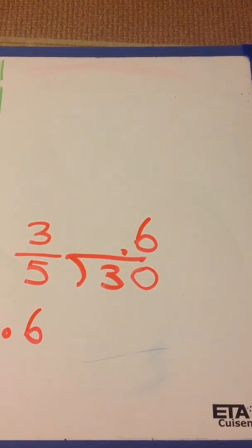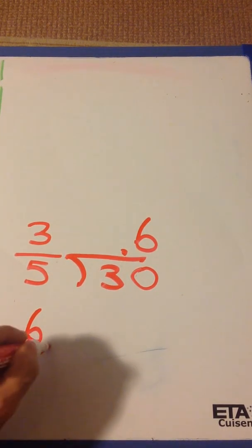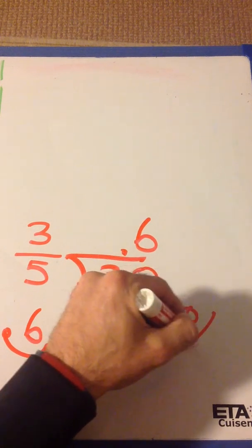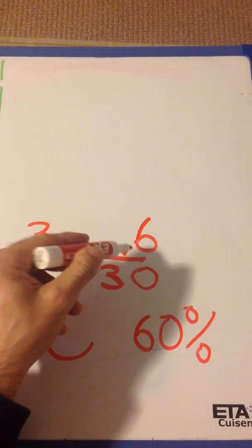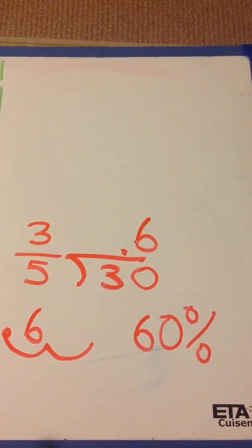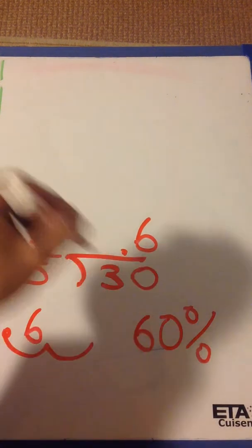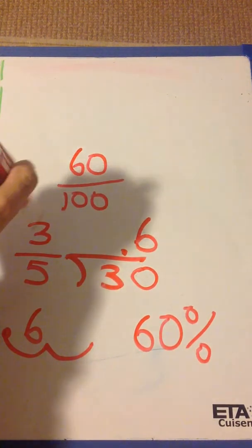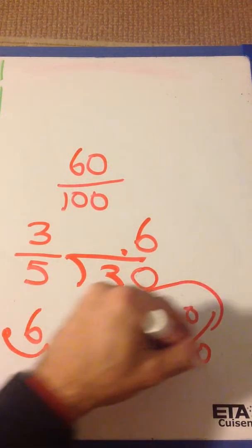And remember, to get a percent, just move it twice. 1, 2, 60%. So 3 fifths is 0.6, or 60%. And we know it's also 60 over 100. Because a percent is based on 100.